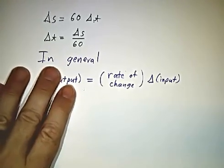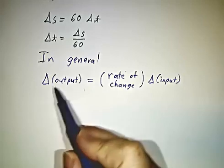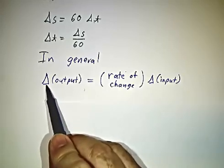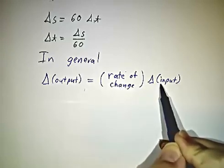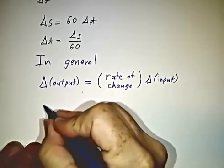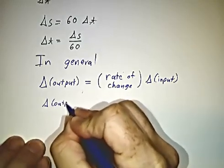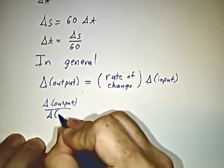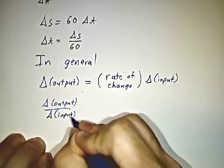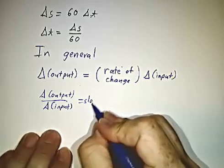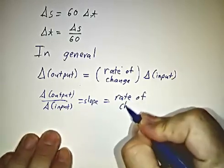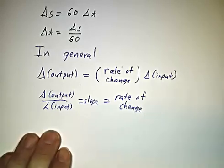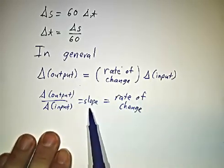The same thing goes in general. In general, whenever you have a function that's evolving linearly, the change in the output is the rate of change times the change in the input. So if you take the change in the output over the change in the input, which is a slope, that's the same thing as the rate of change. So the rate of change is a conversion factor and it's also a slope.